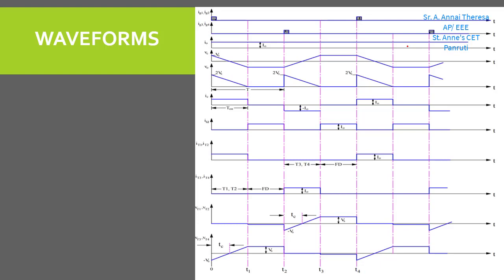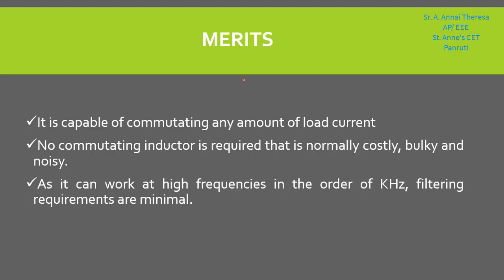These modes of operation of the load commutated chopper repeat cyclically. The merits of this chopper are: it is capable of commutating any high amount of load current. Unlike voltage commutated and current commutated choppers which use both inductor and capacitor as commutating components, here only a capacitor is used. Since no commutating inductor is used, the circuit becomes less noisy and less bulky, reducing cost, bulkiness, and noise.